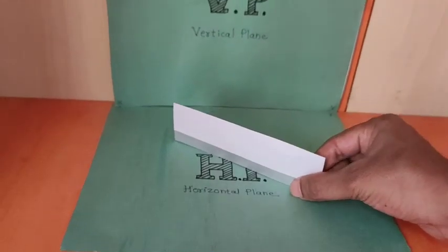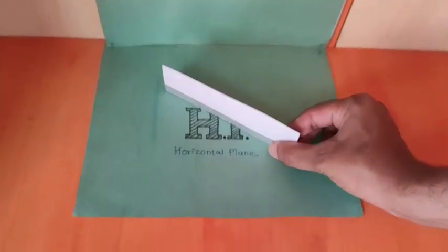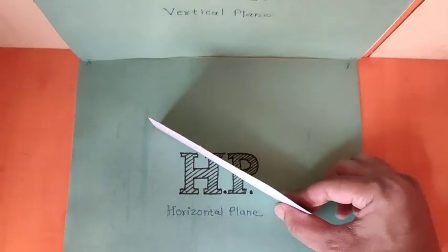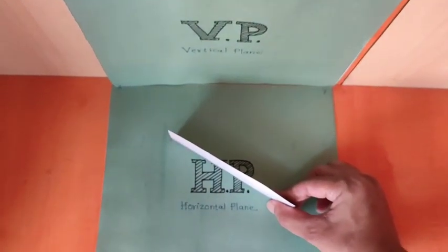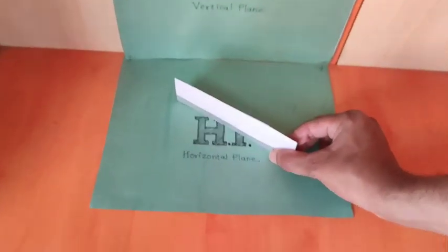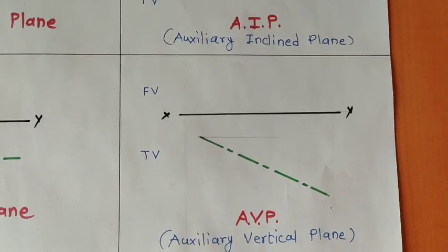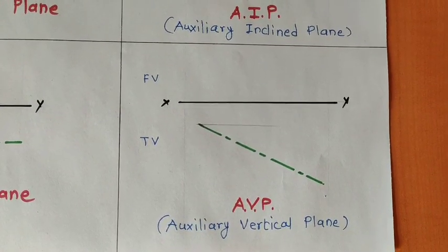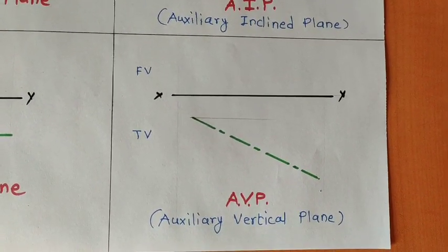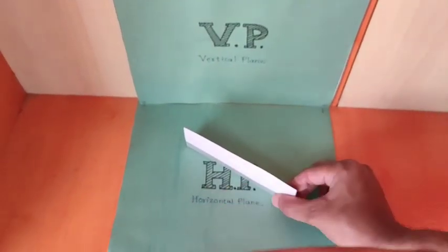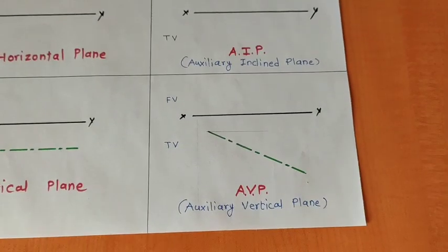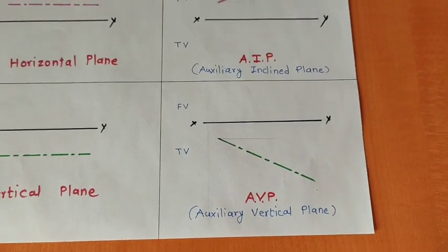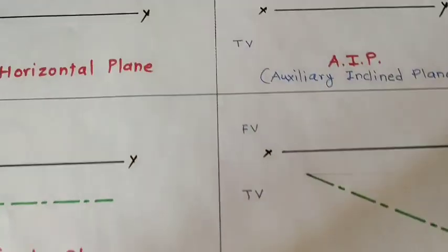Now we are dealing with the last kind of plane. This plane is perpendicular to HP and inclined to VP. This plane is called auxiliary vertical plane. Once we rotate HP by 90 degrees clockwise to represent on paper, this will come into the top view.